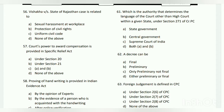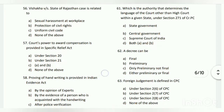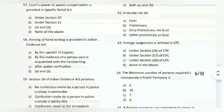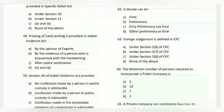Question number sixty-one: which is the authority that determines the language of the court other than the High Court within a given state under Section 271 of CrPC? The answer is A - the state government.